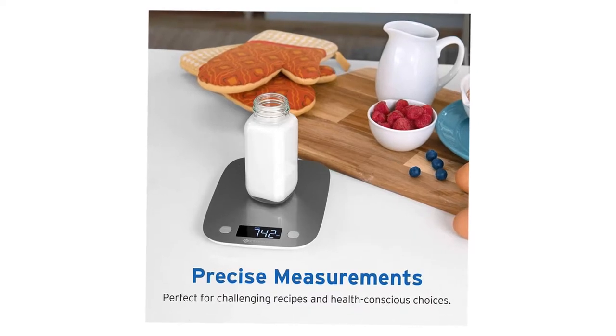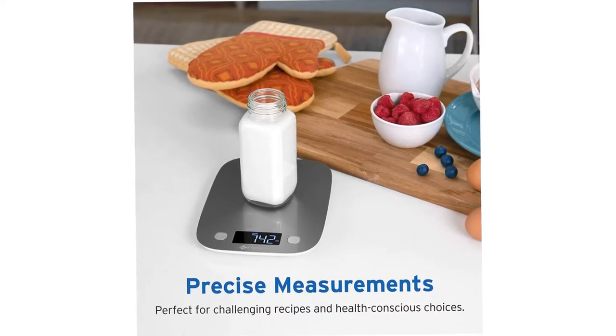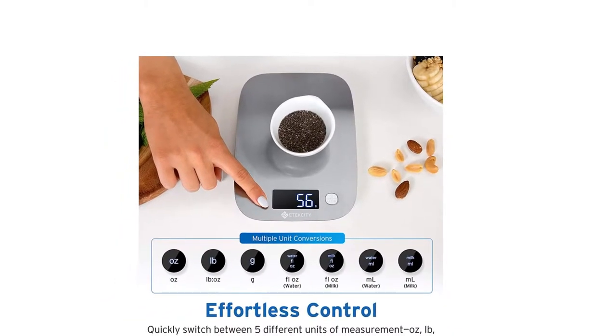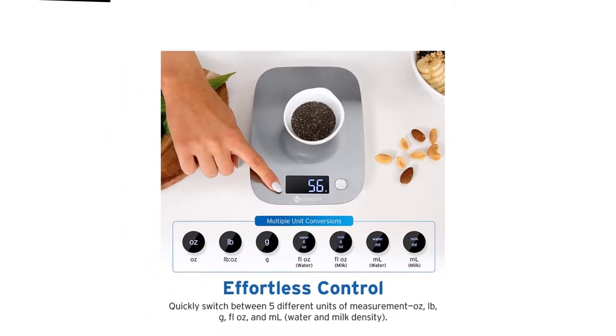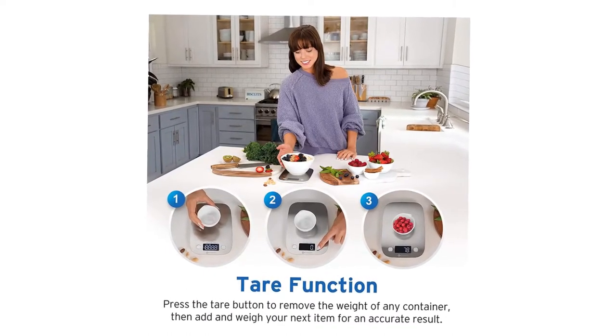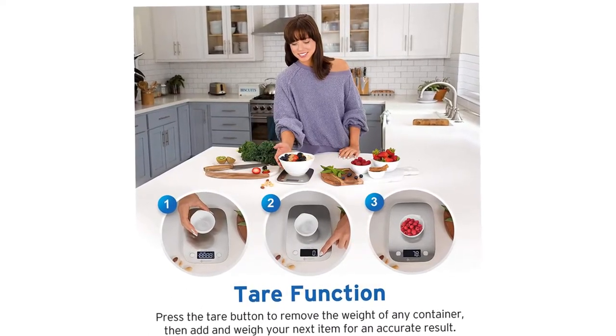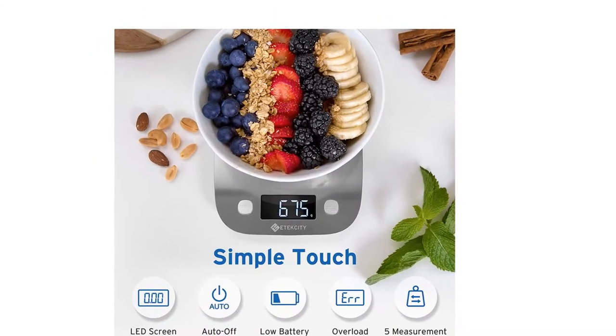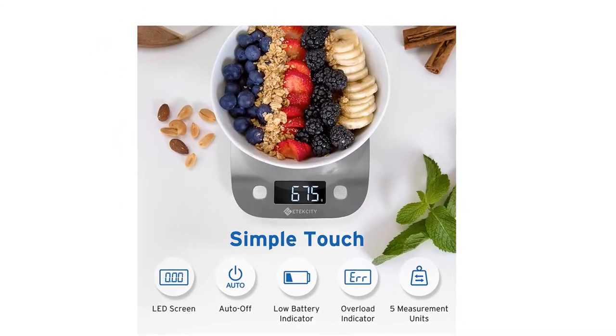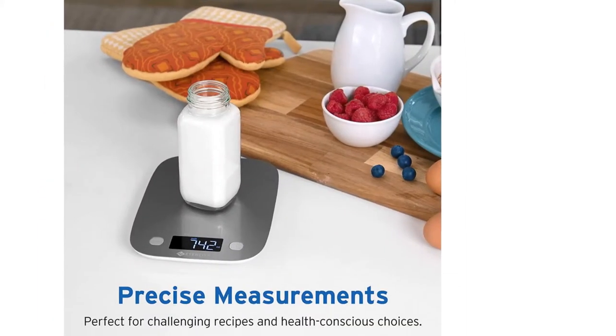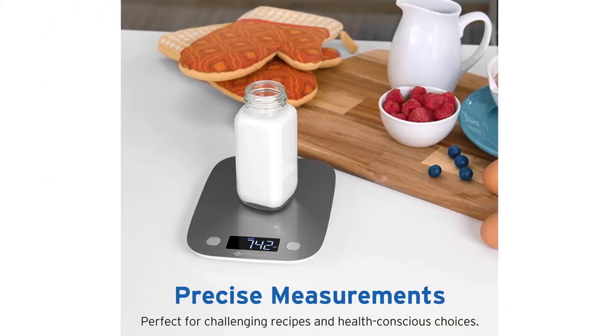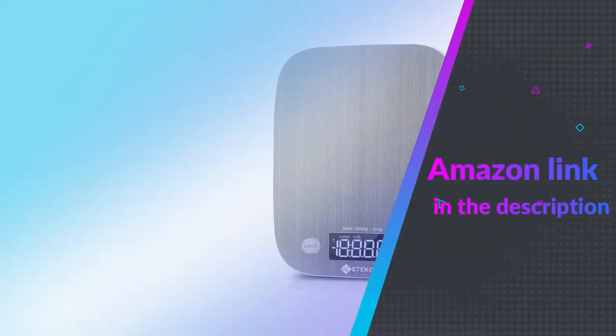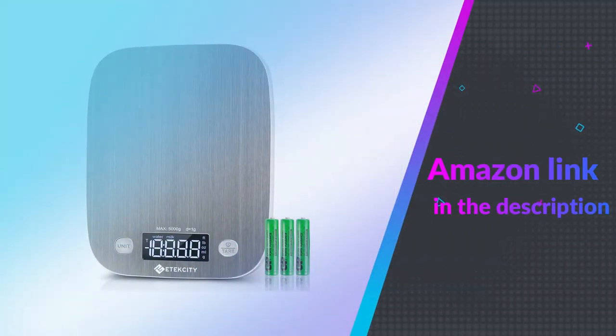Having tested out the Atexity Digital Kitchen Food Scale, I can certainly see why it has garnered thousands of excellent ratings from happy customers. It is a reasonably priced unit that packs a lot of features into a compact, lightweight appliance that is easy to use and provides accurate readings. If you are still searching for the perfect kitchen scale, give it a try. It is everything you could need in one simple package. If you like this product please check out the Amazon link in the description below.